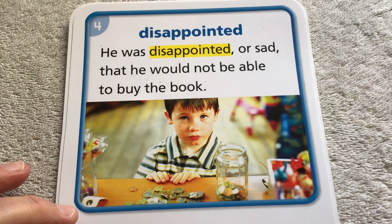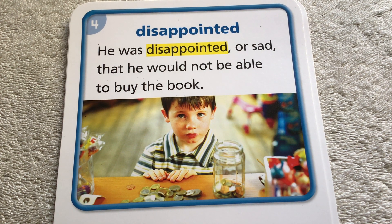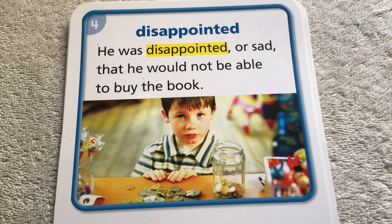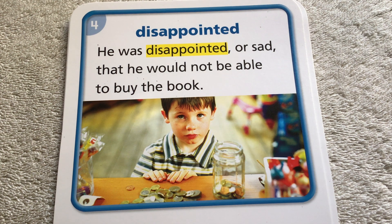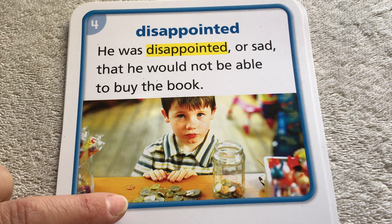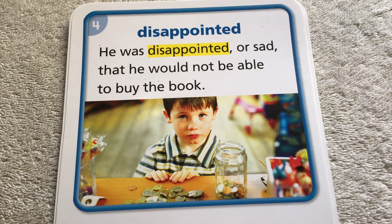Our next word is the word disappointed. It says he was disappointed, or sad, that he would not be able to buy the book. So the boy is a little disappointed. When you're disappointed, it means you feel unhappy because something you hoped for did not happen. So this boy wanted to buy a book — looks like he brought all of his money, he's got a bunch of change here, there's still some change in the jar. He didn't have enough money, so he's disappointed. He feels unhappy because he wanted to buy the book and he couldn't after all. Something he wanted to have happen, couldn't happen.